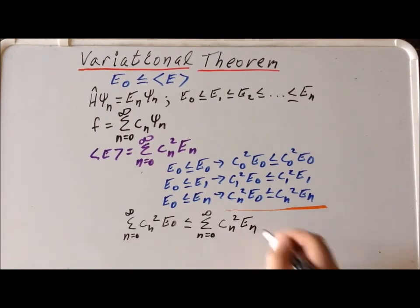What's the left hand side? We can factor out e sub 0, and then the sum of the c sub n squared is simply going to be 1. So the left hand side is going to be equal to e sub 0.